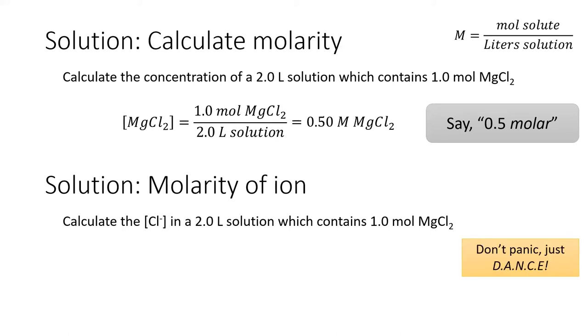To calculate the concentration of chloride ion in this solution, we'll use dimensional analysis. We start with our concentration from part one, which have units of moles of magnesium chloride per liter of solution.